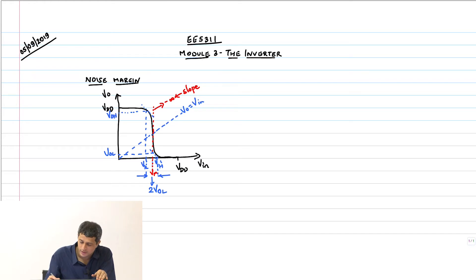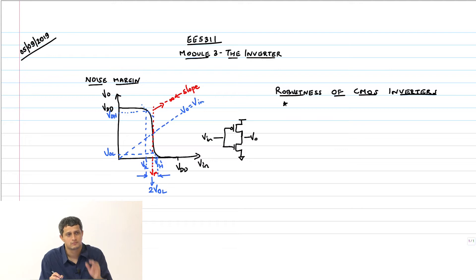Let us just summarize our discussion on robustness of CMOS inverters, V_in, V_out. First key point: logic voltage levels are rail to rail values.